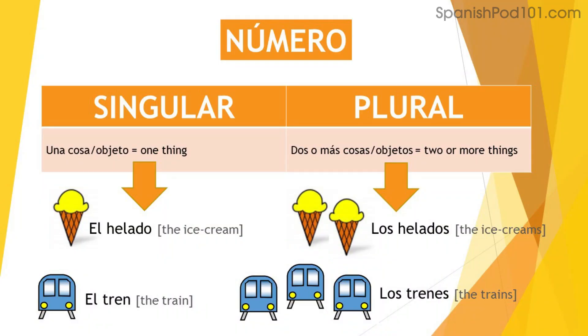Today we're going to learn how to form the singular and plural forms of the nouns — los sustantivos en español — in Spanish. The same as in English, when we have only one thing or one person, we say that's singular. We call this número en español, number. When we talk about número, we reference whether we're talking about one thing — singular — or two or more things — plural. Certain things will have a plural form and a singular form.